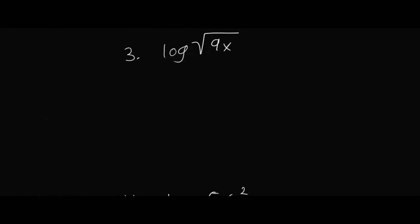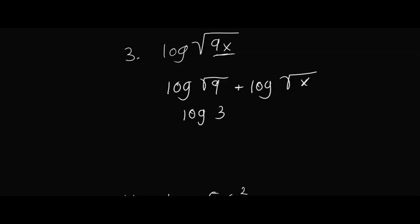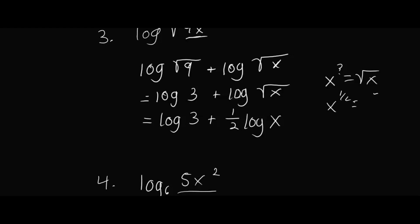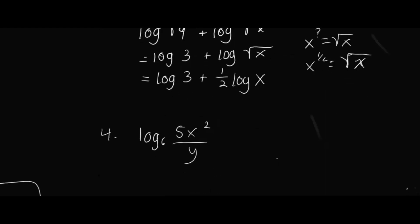Now we have an interesting problem: log of square root of 9x. We see two variables multiplied, so product rule gives log(√9) + log(√x). The square root of 9 is just 3, so that's already simplified. The square root of x can be written as x to the one-half power, so using the power rule we can simplify log(√x) further to one-half times log x.